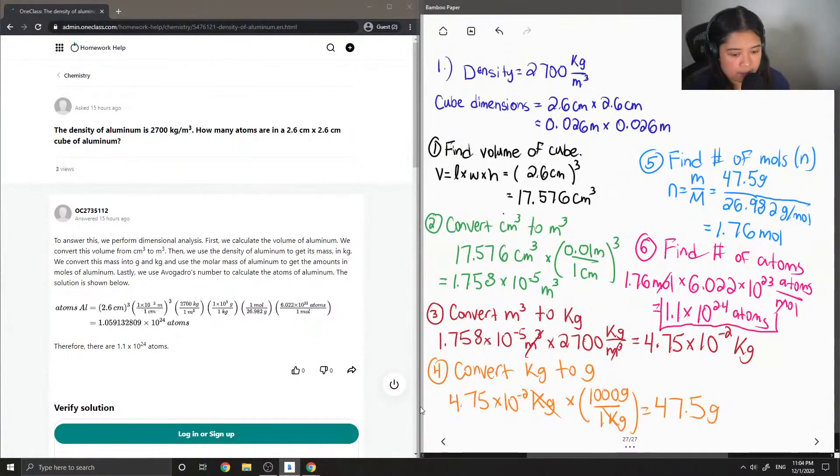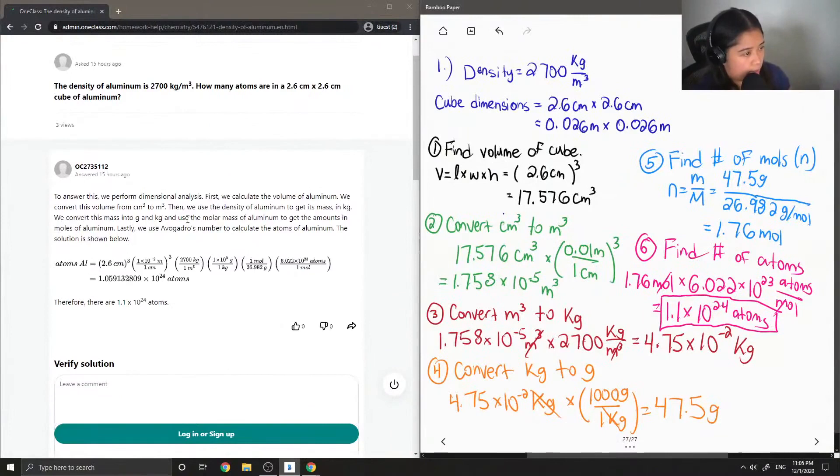So like I said, this is a multi-step question, but the more you get used to converting, the faster it'll be to answer a question like this. This tutor said to answer this, we perform dimensional analysis. First, we can calculate the volume of aluminum. We convert this volume from centimeter cubed to meters cubed. Then we use the density of aluminum to get its mass in kilograms. We convert this mass into grams and use the molar mass of aluminum to get the amount in moles of aluminum. Lastly, we use Avogadro's number to calculate the atoms of aluminum.